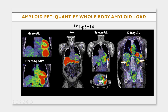We are gaining new insights into this disease. We always thought that transthyretin amyloid predominantly affects the heart, the musculoskeletal system, and the nervous system. But autopsy data is suggesting that transthyretin can deposit in the liver and in the kidneys as well.